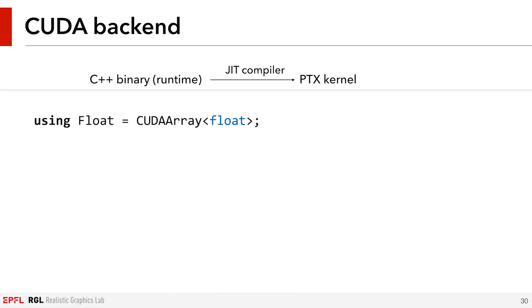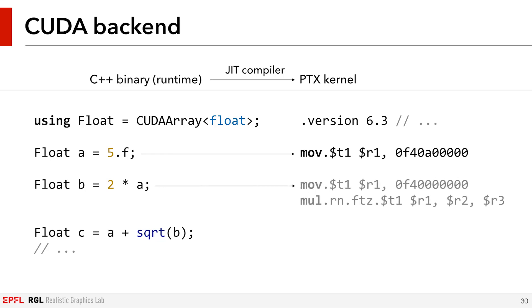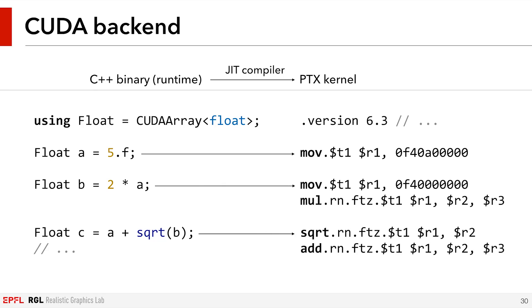Let's look at the CUDA backend. By setting the float type to be Enoki's CUDA array type, we allow that backend to intercept all operations and translate them on the fly to GPU code. Essentially, the CUDA backend implements a just-in-time compiler from the source C++ code to PTX, which is a sort of assembly language for CUDA kernels. These operations keep being accumulated until a synchronization point is encountered, then the kernel is assembled and executed on the GPU. Inside the kernel, all of the intermediate results can be stored in registers instead of memory, which really helps with performance. With this approach, we automatically get kernel fusion. The compiled kernels are cached, so in the end the compilation time is really negligible.